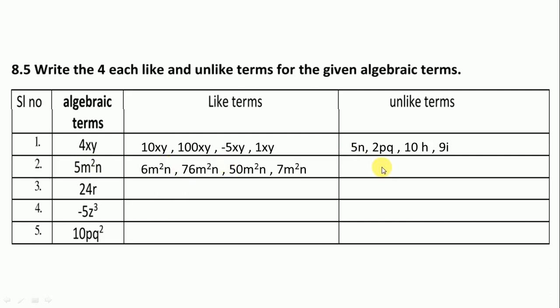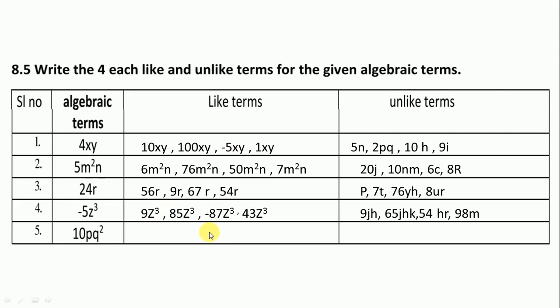Here we change number and alphabet both. Here the variable is r, so we change the number 24 and keep r as it is. Here we change alphabet and number also. Likewise, -5z³ and 10pq².